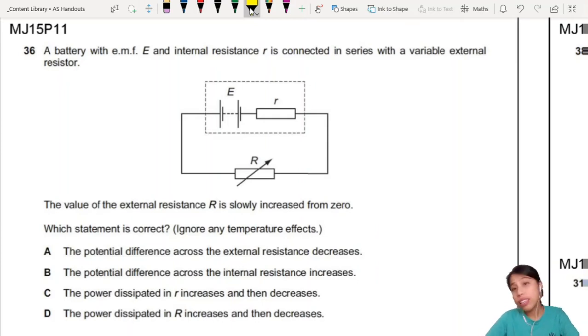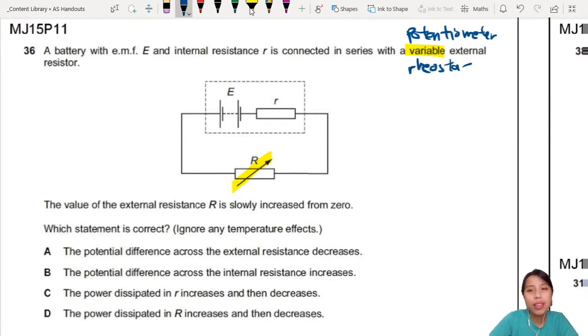A battery with EMF E and internal resistance R is connected in series with a variable external resistor. Variable means you have the arrow there, means you can change resistance. You also call these potentiometers. What else do we call this? Rheostat? They all mean the same thing, similar thing.